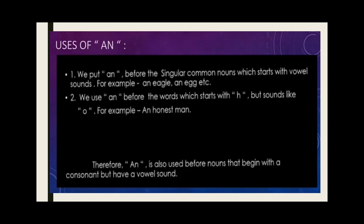For the use of 'an': we put 'an' before singular common nouns which start with vowel sounds — for example, an eagle, an egg. The general rule is to put 'an' before words that start with a vowel letter and are singular in number. We also use 'an' before words starting with 'h' but sounding like a vowel — for example, an honest man. Here the 'h' is silent and the word is pronounced starting with the vowel sound 'o.' So 'an' is also used before nouns that begin with a consonant but have a vowel sound.